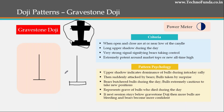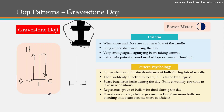To understand what the Gravestone Doji signifies in terms of market movement: the price opened, during the day it went far up and made a high, then the bears took over with such powerful bearish control that it ended almost at the same price as the open. The open, close, and low of the day were almost the same. There is no hard and fast rule that they must all be equal — a small real body at the bottom still qualifies as a Gravestone Doji.